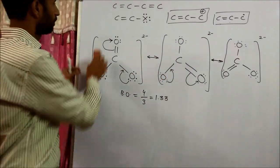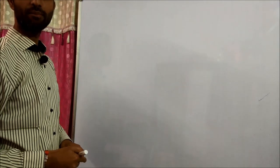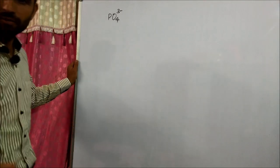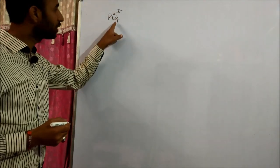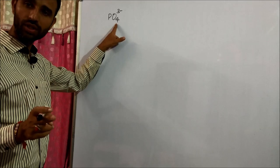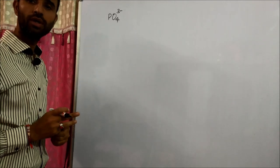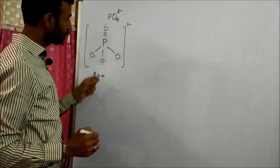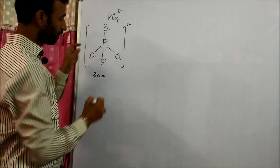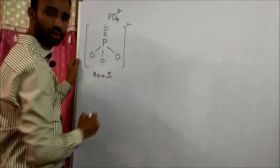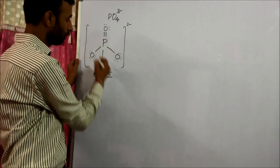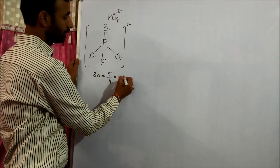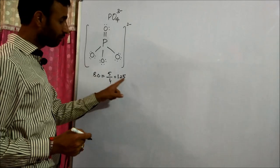One more example — let's take the phosphate ion. In phosphate ion, three oxygens form single bonds and one oxygen forms a double bond. Let us calculate the bond order. Total bonds are 5 — counting 2, 3, 4, 5 — and the total number of positions is 4. So bond order comes out to be 5 divided by 4, which is 1.25. Again, a fractional bond order.